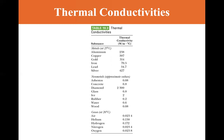Most nonmetals have very low thermal conductivities, except for diamond at 2,300. Glass is 0.8, asbestos is 0.08, and wood is 0.08. Gases also have low thermal conductivities — air, helium, hydrogen. The greatest of those is hydrogen at 0.172.